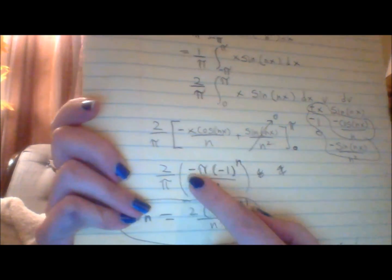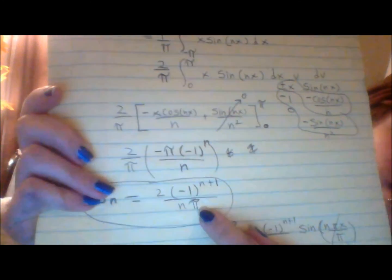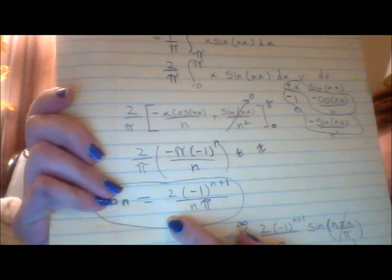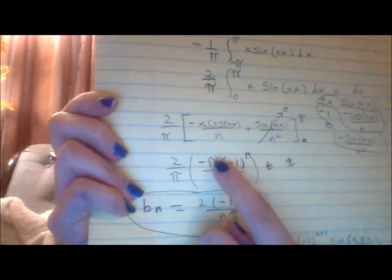And then that pi is just from the x. Because this negative is out here, you can just multiply these together and get negative 1 to the n plus 1. And bring in your 2 and your over pi to cancel that pi.